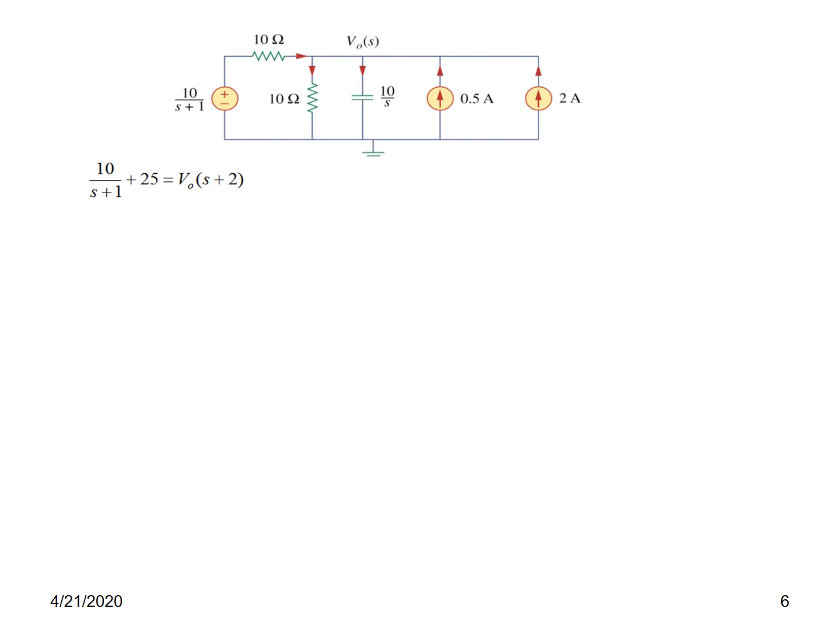Taking LCM (s+1), the left side becomes 10 + 25s + 25, which equals v_naught·(s + 2). Therefore v_naught(s) = (25s + 35) / [(s+1)(s+2)].